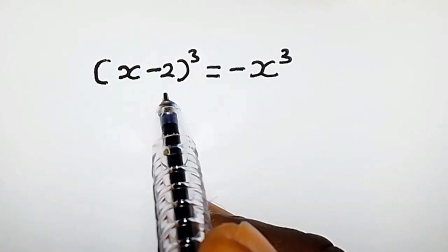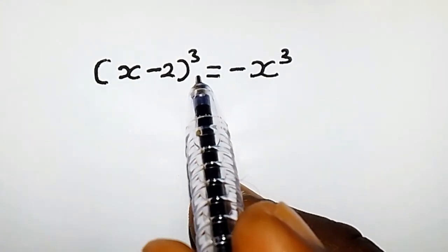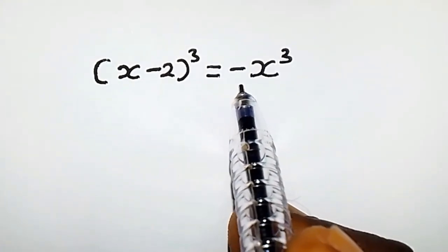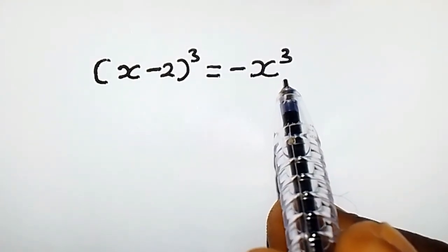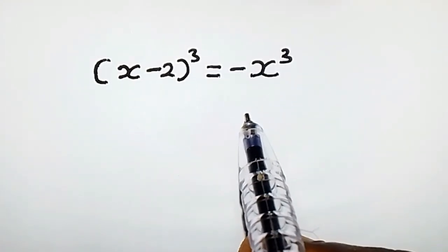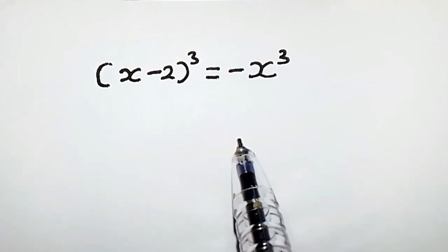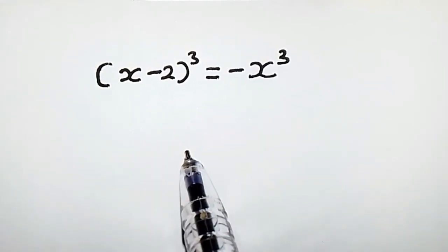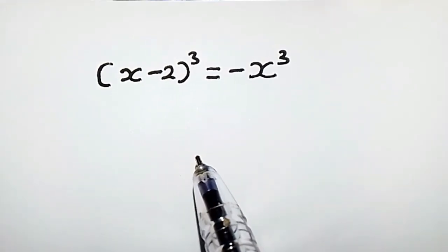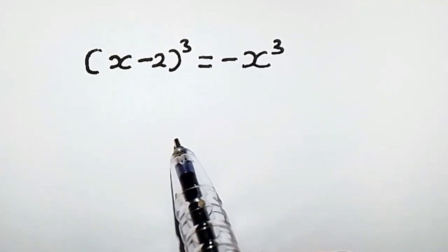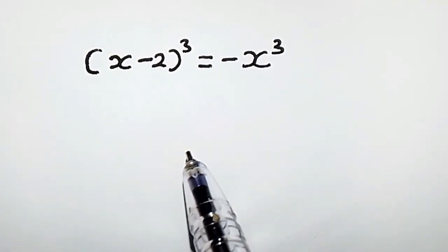We have (x minus 2) all to the power of 3 equals negative x to the power of 3. How do we solve this cubic equation? Without further delay, let's begin.